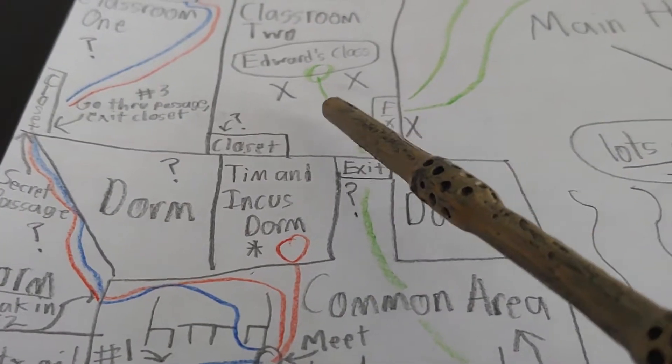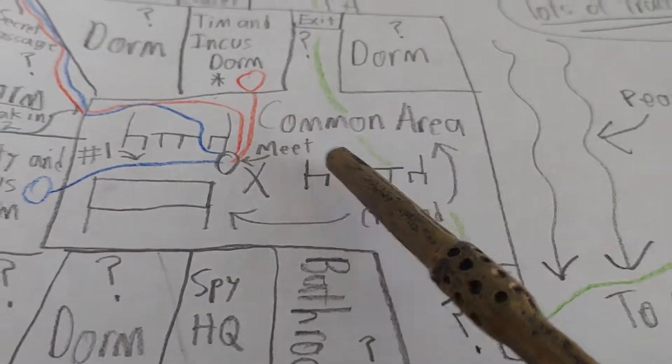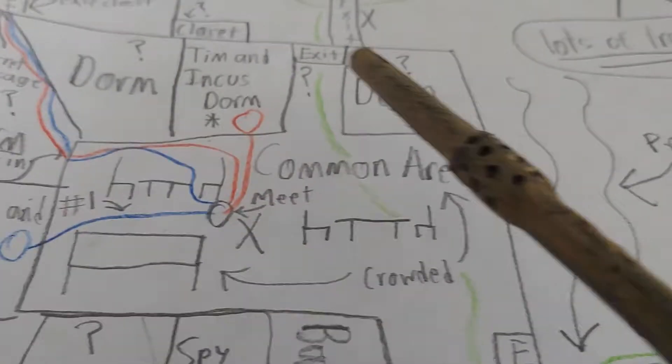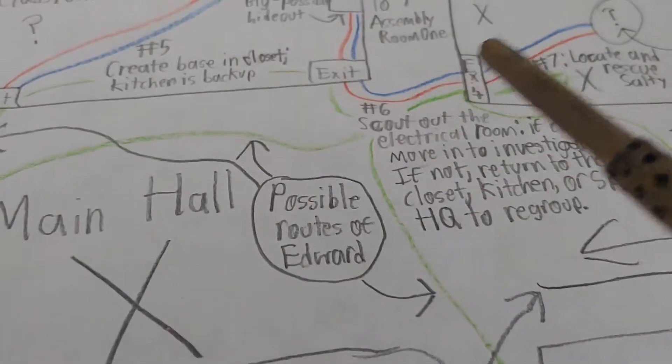He could also do a very unlikely path but also a dangerous path. He could come through this common area where we are supposed to meet and go all the way through here and exit and go up through the main hallway to the electrical room.